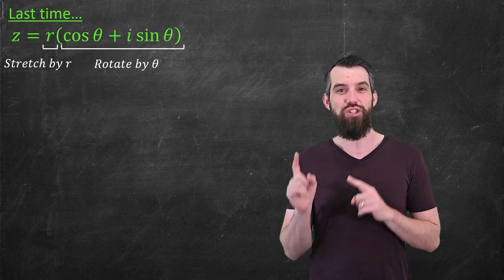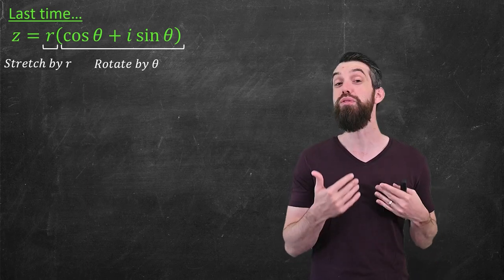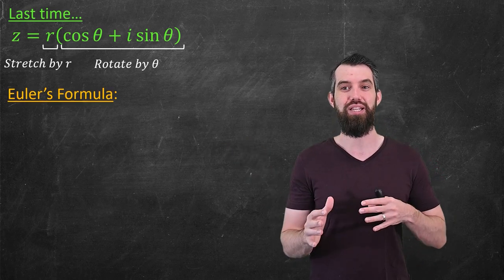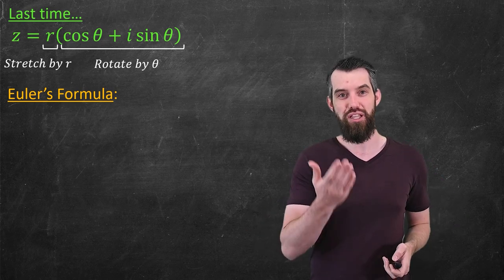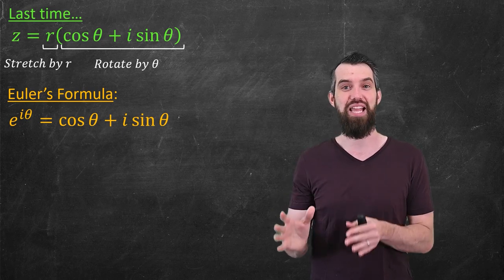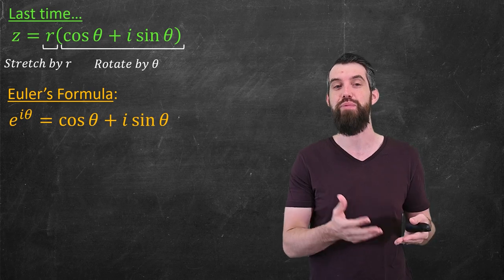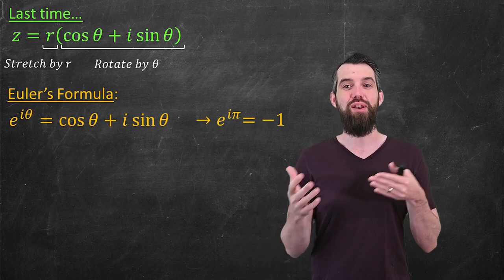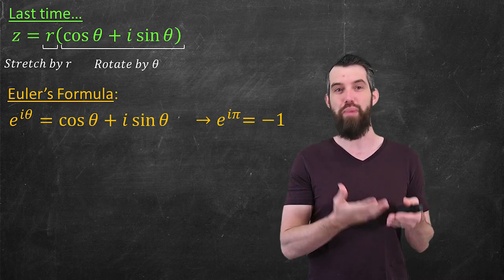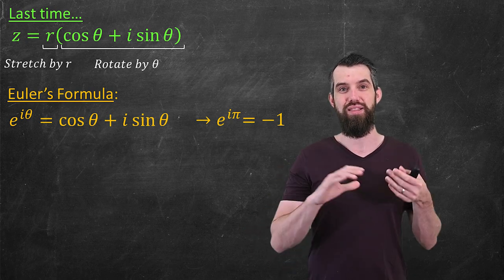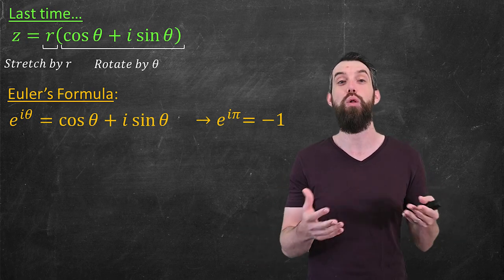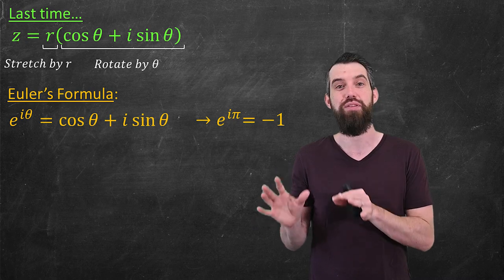I want to show you a very important formula — one of the most important formulas in mathematics — called Euler's formula. What Euler's formula does is clean up this presentation. The formula says e^(iθ) = cosθ + i sinθ, the exact same expression we saw in our representation of z. Euler's formula is particularly nice if you plug in θ = π: you get e^(iπ) = −1 + i·0, just −1. This formula is very aesthetically pleasing because it relates many of the special numbers in mathematics in one formula you almost wouldn't believe could be true.